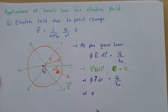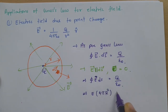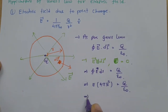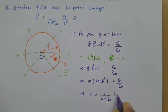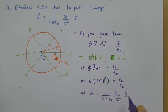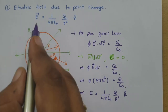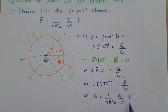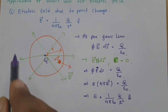Carrying out the integration, electric field times the enclosed surface area of the sphere (4πr²) equals q / ε₀. Therefore, the electric field is (1 / 4πε₀) × (q / r²) × r̂. We have proved the electric field due to a point charge using Gauss's Law.